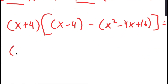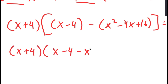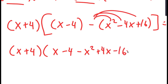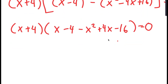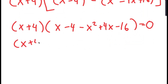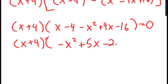Distributing the negative sign gives x plus 4 times x minus 4 minus x squared plus 4x minus 16, equal to 0. Simplifying the bracket, I get x plus 4 times negative x squared plus 5x minus 20, equal to 0.